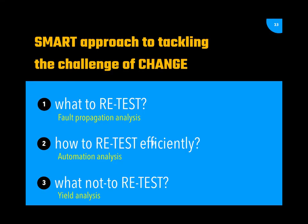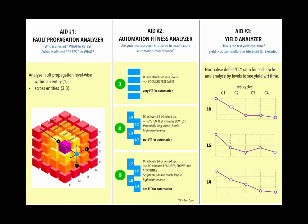In summary, the smart approach to tackling the challenge of change answers three questions: what to retest — using Fault Propagation Analysis; how to retest efficiently — using Automation Fitness Analysis; and what not to retest — using the Yield Analyzer. These are the three aids for smart regression.